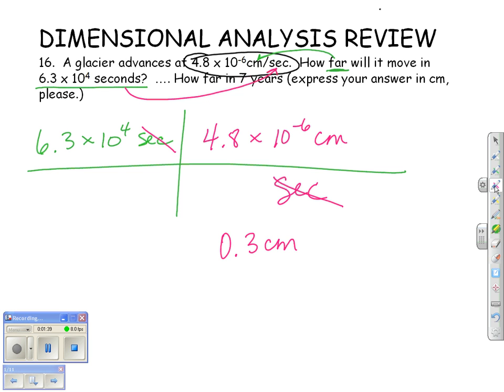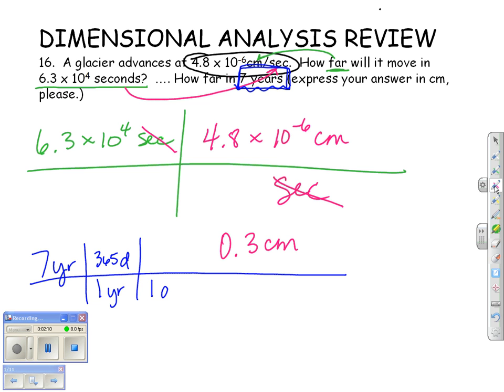The next part of this question says, how far will it travel in 7 years? And they want us to, again, express it in centimeters. Well, we're going to start with the time we are given, which is 7 years. The only time unit that we have in our ratio, which is circled in black there, is centimeters over seconds. So we have to get years and seconds to match. So we're going to have to go from years to seconds. So we know for one year, there's 365 days. For one day, there's 24 hours. And then for one hour, there's 3,600 seconds.